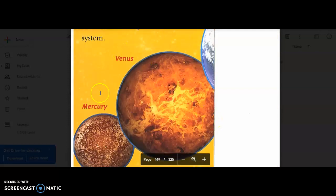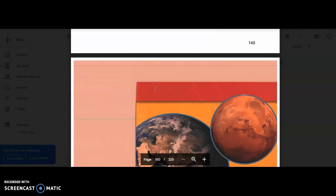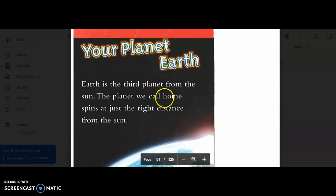So Mars, Earth, Venus, and Mercury are called the rock planets because they're made of rock and metal. Now let's go to page 14.